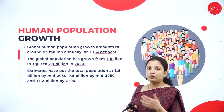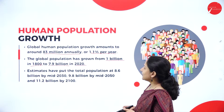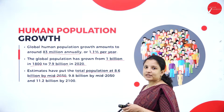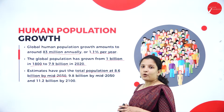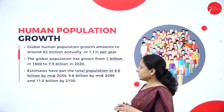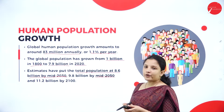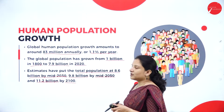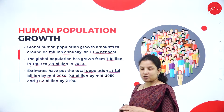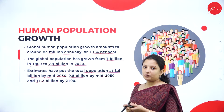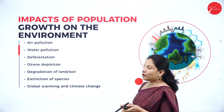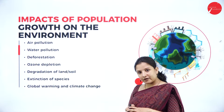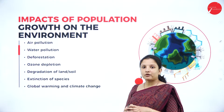Estimates put the total world population at 8.6 billion by the middle of 2030, 9.8 billion by 2050, and 11.2 billion by 2100. This drastic increase in population in the future can pose a lot of problems to the environment and also to human beings. Therefore, let's understand the impacts of population growth on the environment.